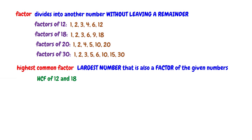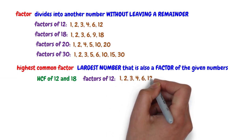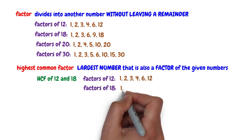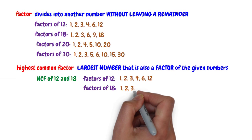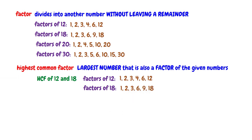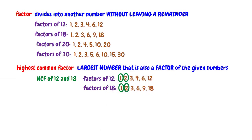To find the highest common factor, first find the common factors of the given numbers. We've seen that the factors of 12 are 1, 2, 3, 4, 6, and 12, and the factors of 18 are 1, 2, 3, 6, 9, and 18. The common factors of 12 and 18 are 1, 2, 3, and 6.